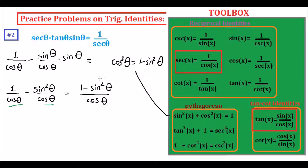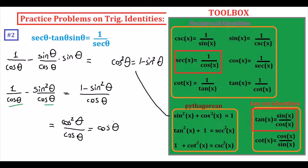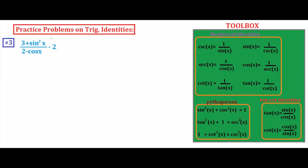Cosine squared theta divided by cosine theta equals cosine theta, since two factors of cosine divided by one factor of cosine gives cosine theta. Our left-hand side is cosine theta, and we can convert cosine theta as one over secant theta. So we verify that this is true.